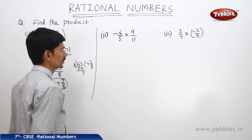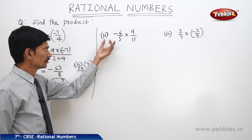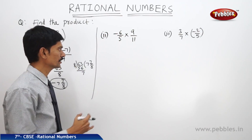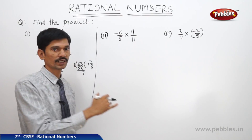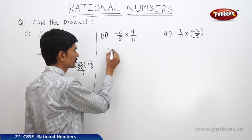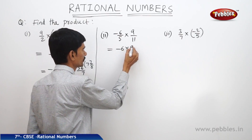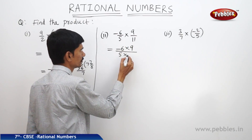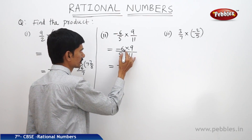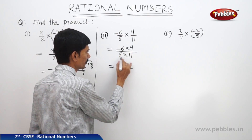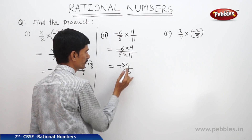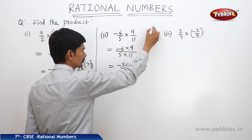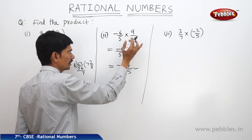Now the second question in multiplication of rational numbers: multiply minus 6 by 5 by 9 by 11. We do the same thing — find the product of the numerators and product of the denominators. This equals minus 6 into 9, divided by 5 into 11, which is minus 54 by 55. We cannot cancel 54 and 55, so this is the product of minus 6 by 5 and 9 by 11.